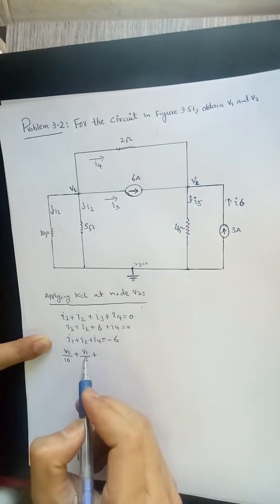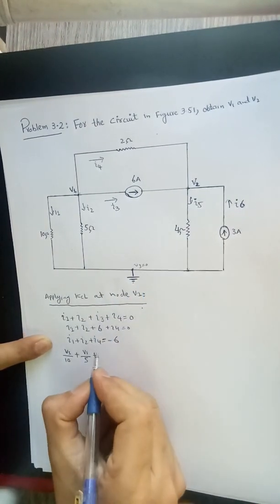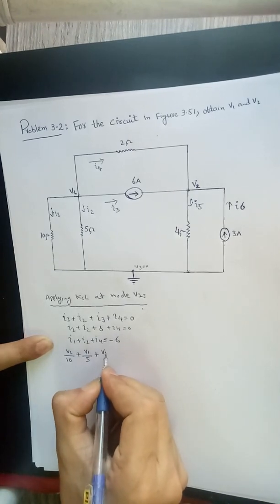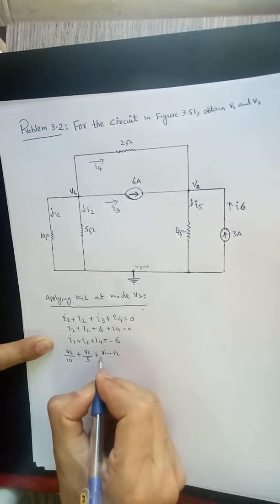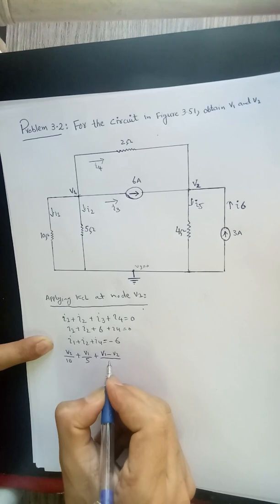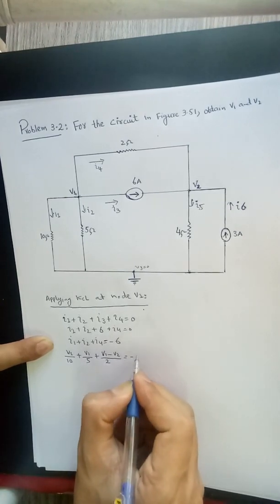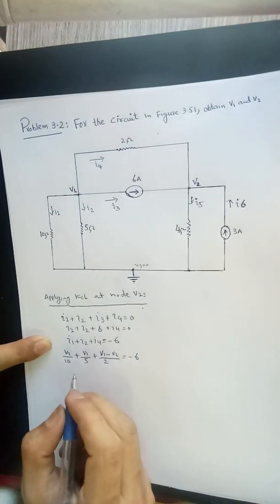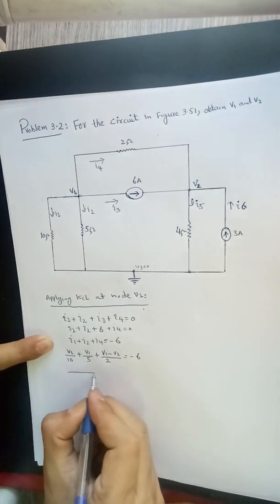So we can say V1 minus V2 divided by 2, so V1 minus V2 is equal to minus 6. Taking LCM 10 as the LCM.